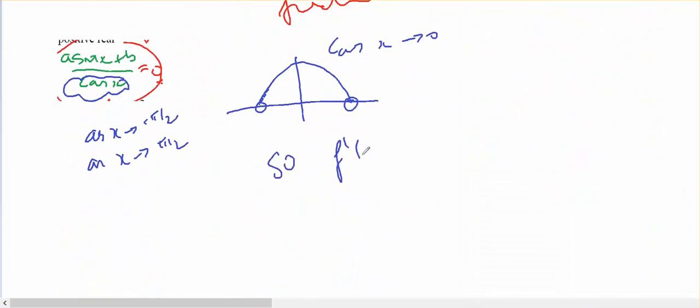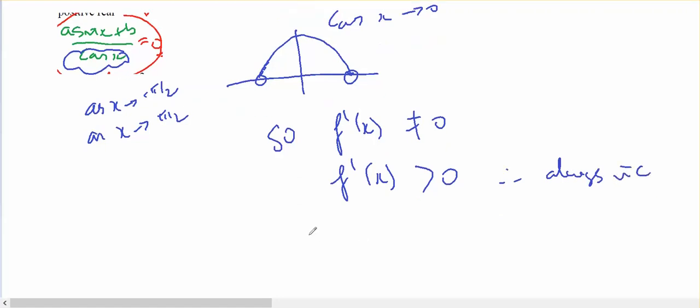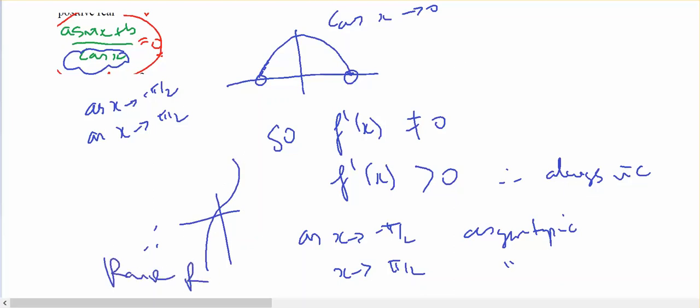So f'(x) does not equal zero. f'(x) is always bigger than zero, therefore always increasing. As x approaches -π/2, asymptotic. And as x approaches π/2, asymptotic. Therefore, range is all real numbers.